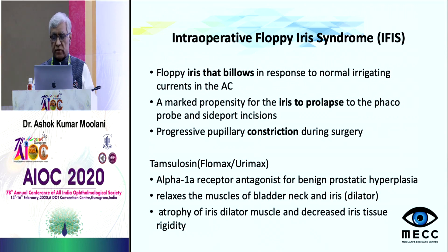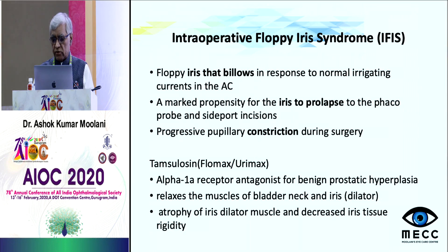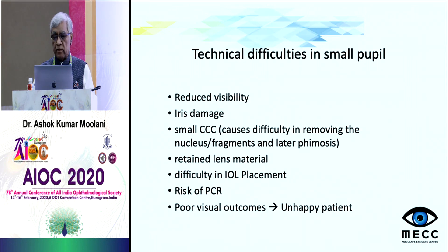IFIS occurs due to the use of Tamsulosin or URIMAX, which is an alpha-1 receptor antagonist used for benign enlargement of the prostate. It relaxes the muscles of the bladder neck and bladder, and the dilator muscle in the iris, causing atrophy of the iris dilator muscle and decreased iris tissue rigidity.